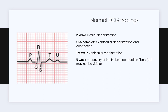On a normal ECG tracing we will see a P wave, a QRS complex, a T wave, and sometimes a U wave. The P wave represents atrial depolarization. The QRS complex represents ventricular depolarization and contraction. The T wave equals ventricular repolarization. The U wave, which we don't pay too much attention to, is the recovery of the Purkinje conduction fibers — it might not even be visible.